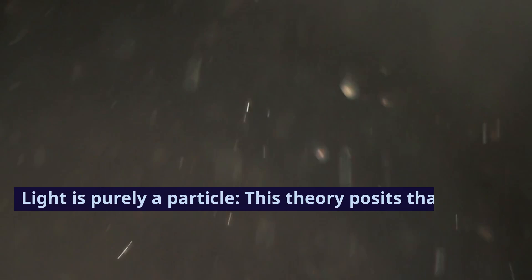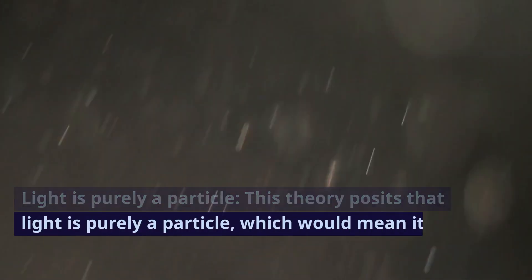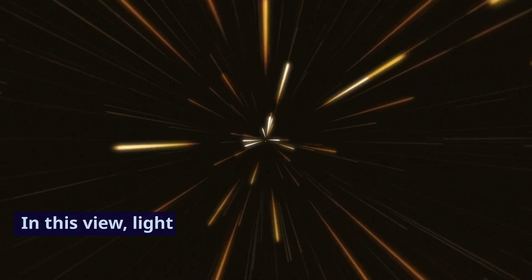Light is purely a particle. This theory posits that light is purely a particle, which would mean it has mass. In this view, light cannot exceed the speed of light.